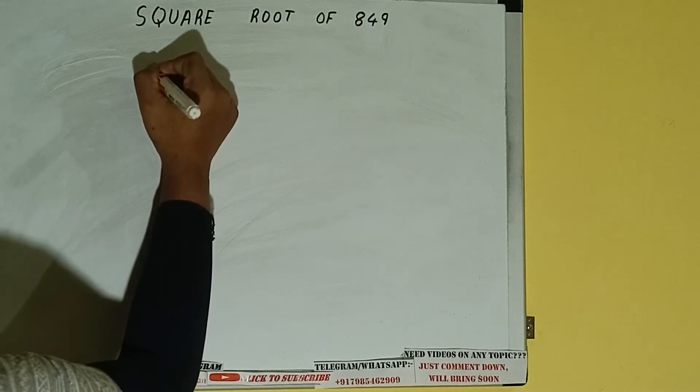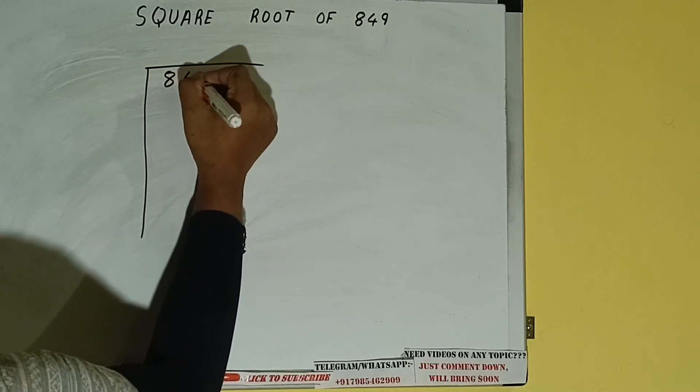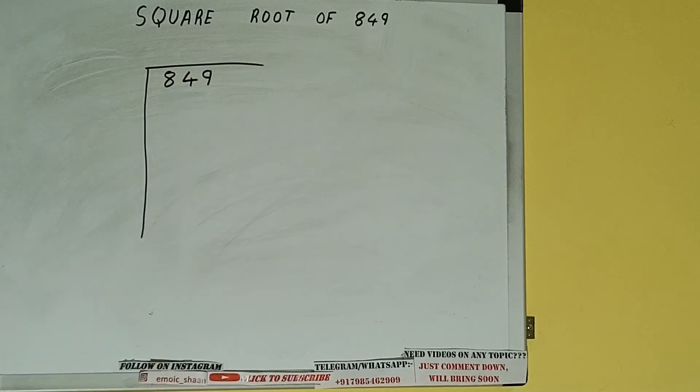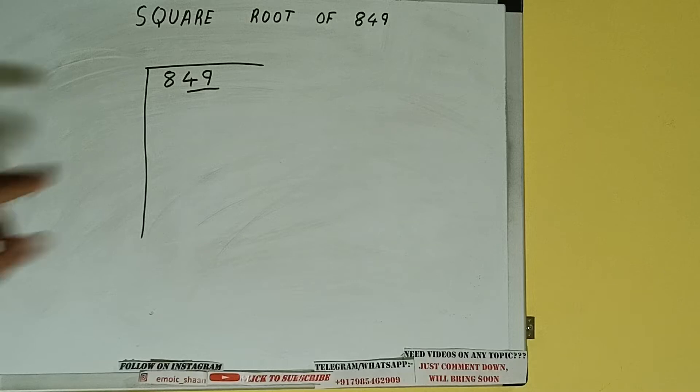First of all, we need to write the number like this. The next thing we need to do is form pairs from the right hand side. So one pair will be this and this eight will be left out. So first we'll write this eight and then we'll bring down the pair.